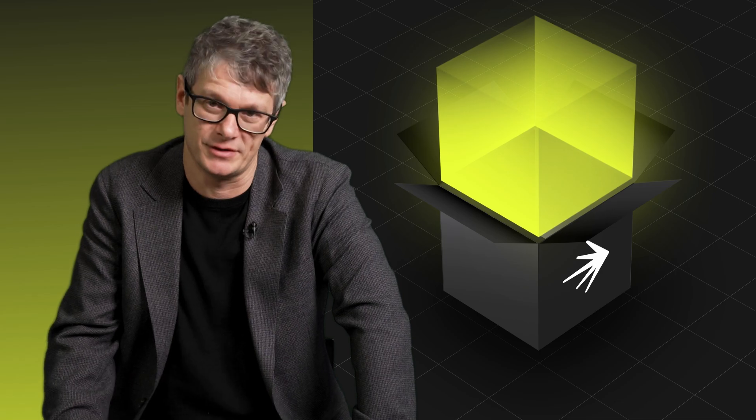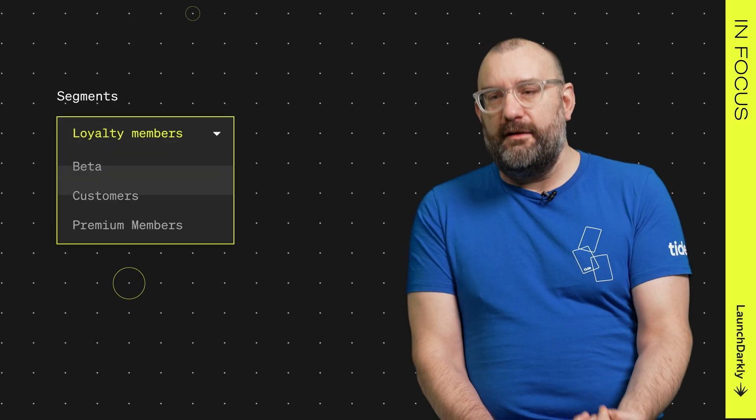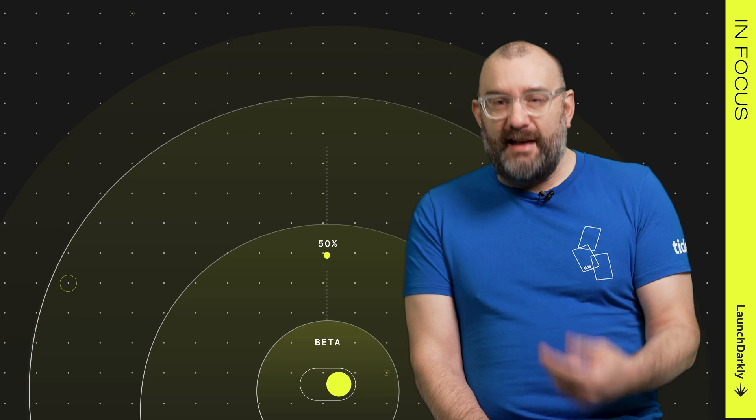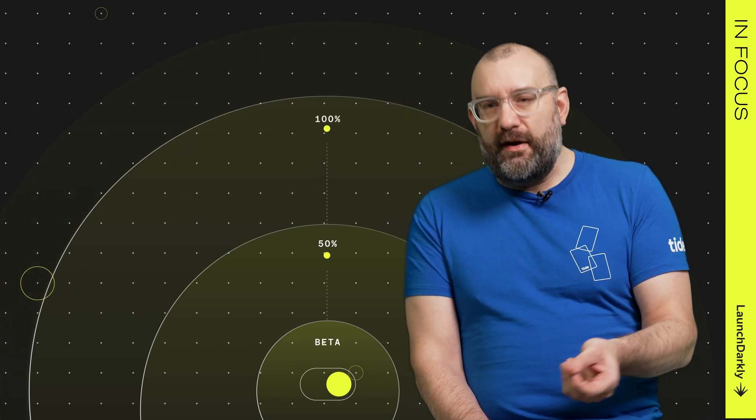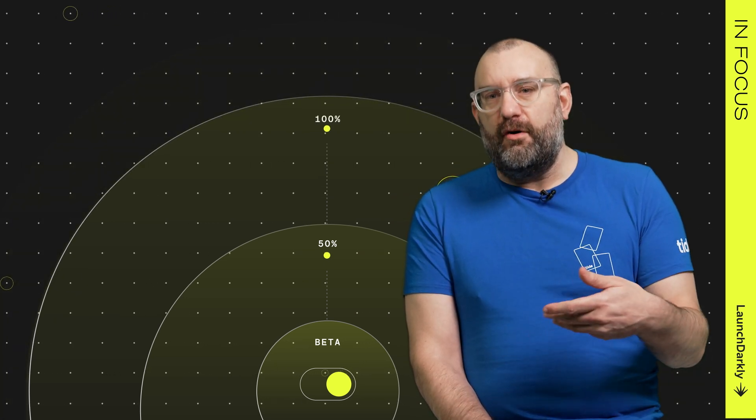Our homegrown solution with feature toggles at that point was inadequate. We started looking at different solutions. LaunchDarkly was one of them. And from a buyer versus build point of view, it makes sense to actually buy the product rather than build it yourself. It's really vital that we have not only control of those releases, but good visibility, good dashboards, so we know exactly what's gone out to which proportion of our user base.